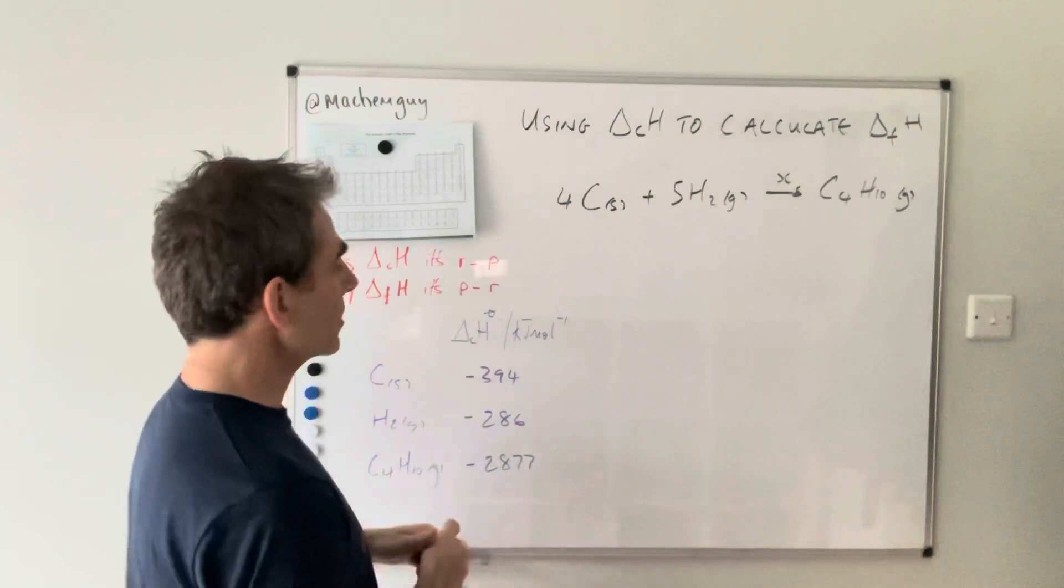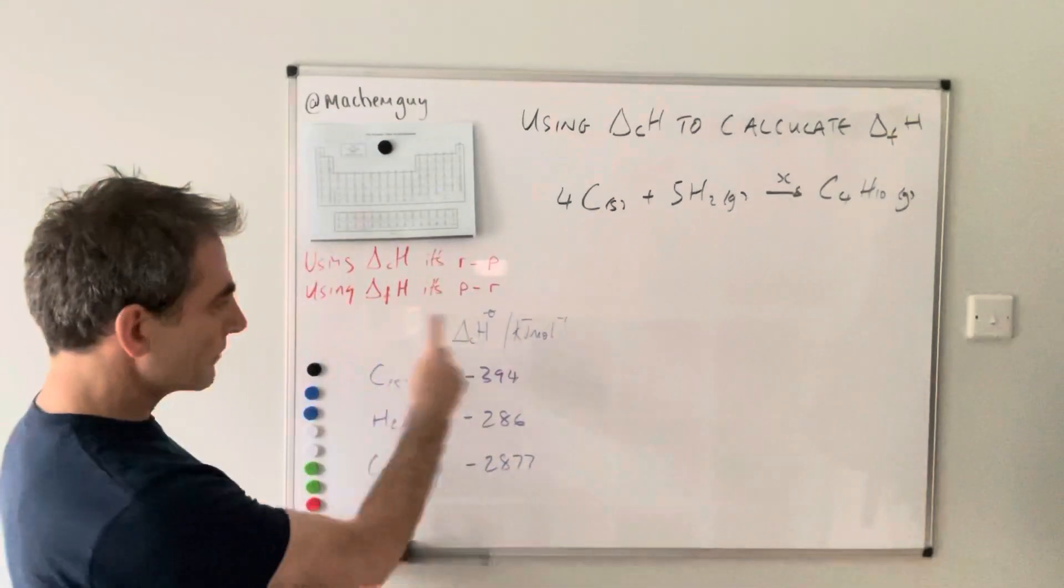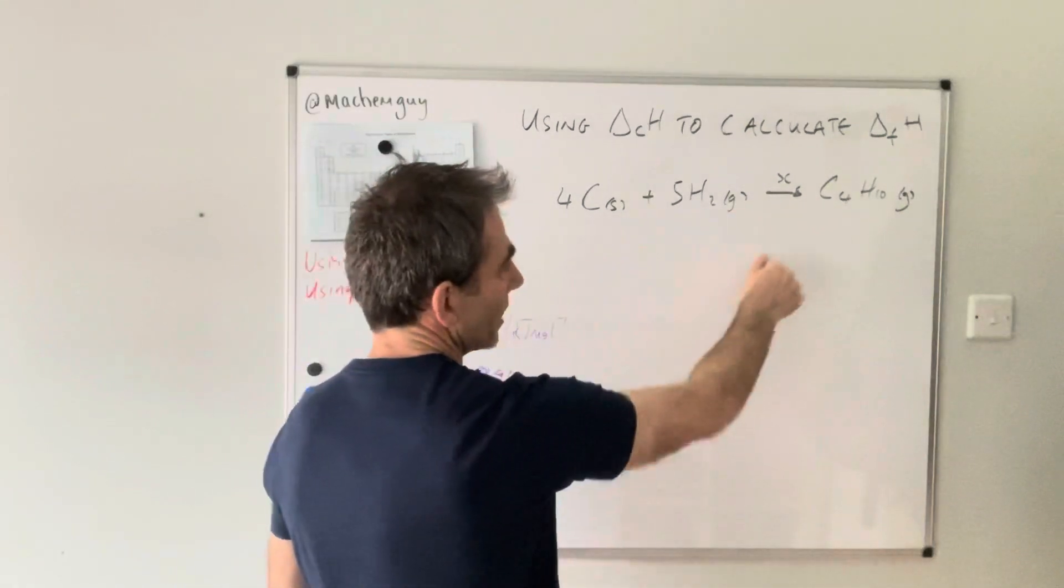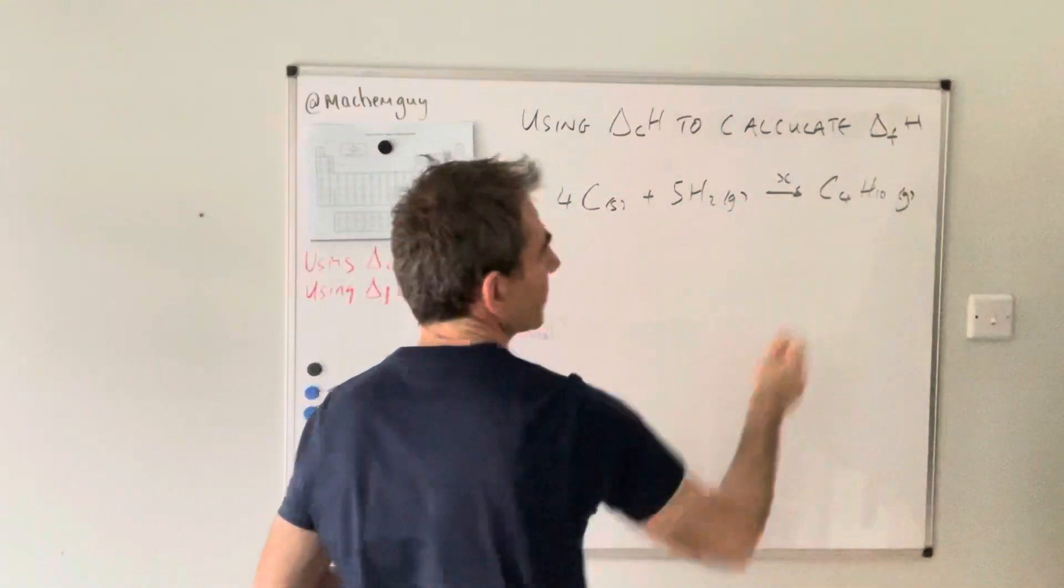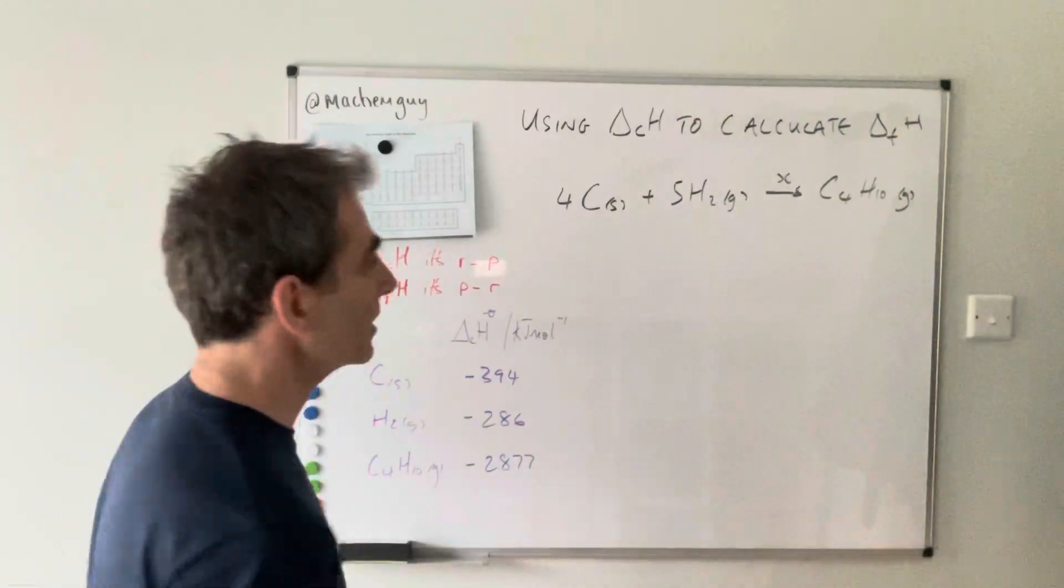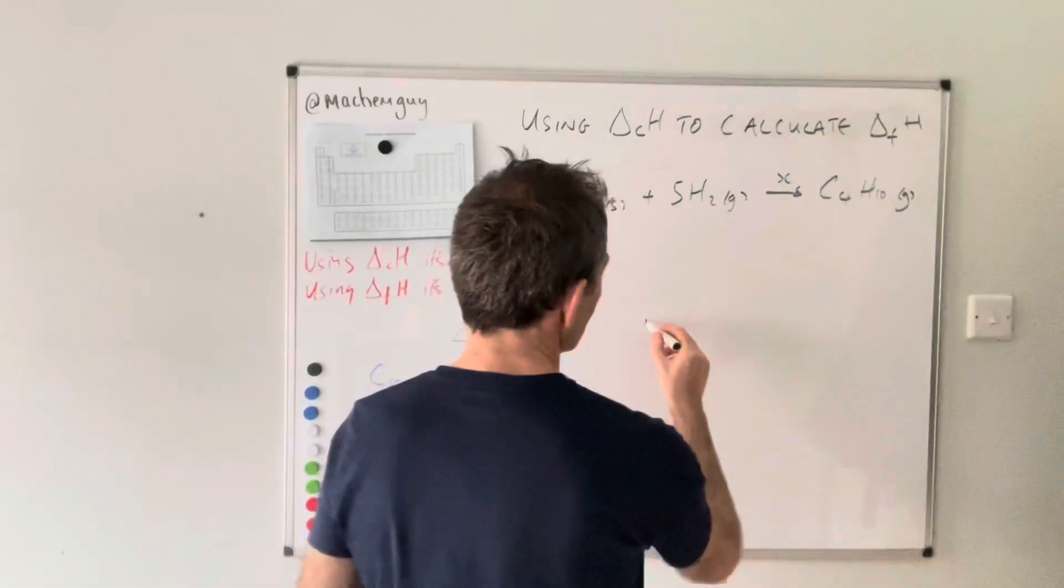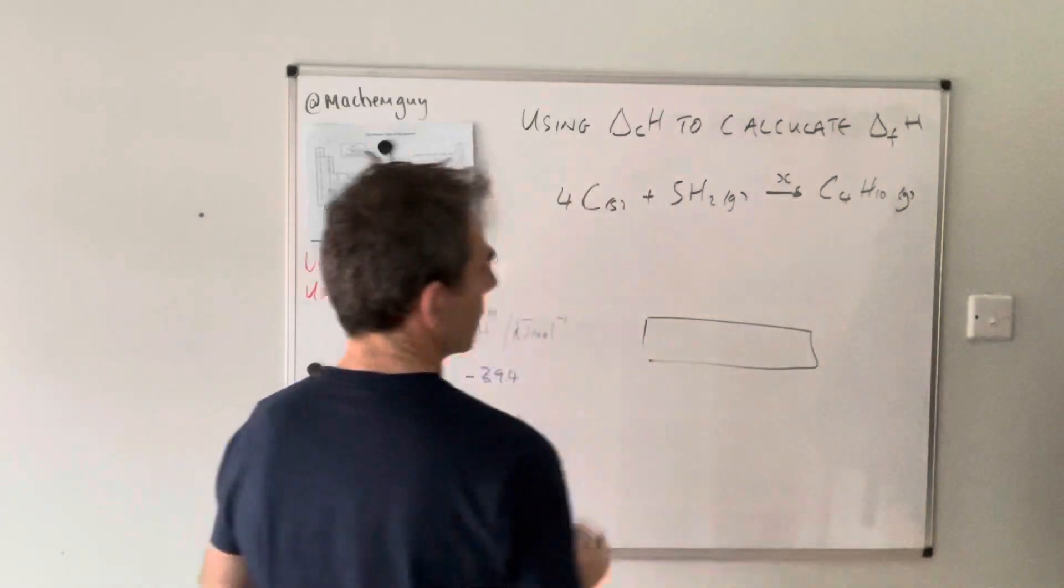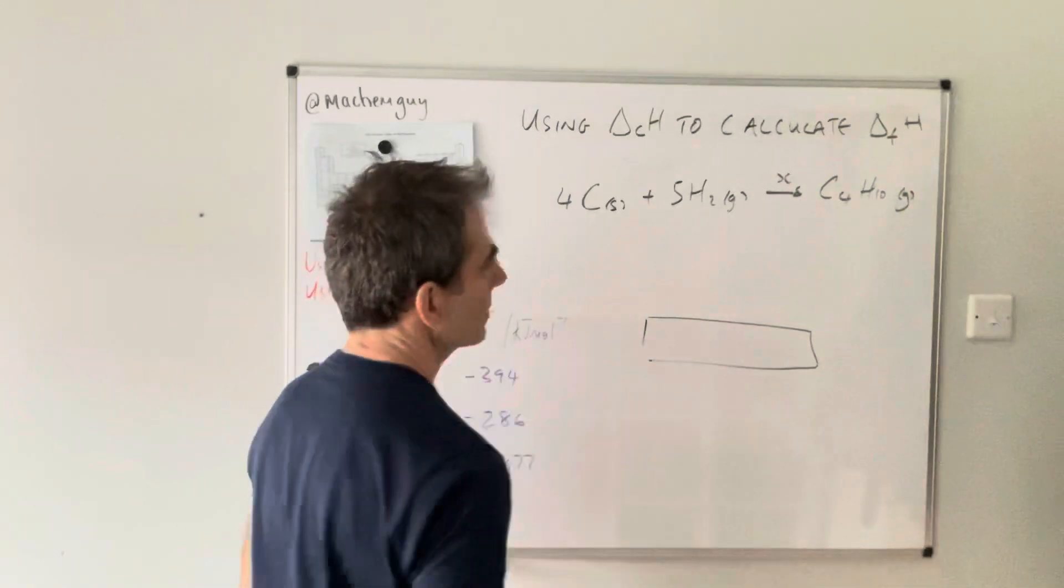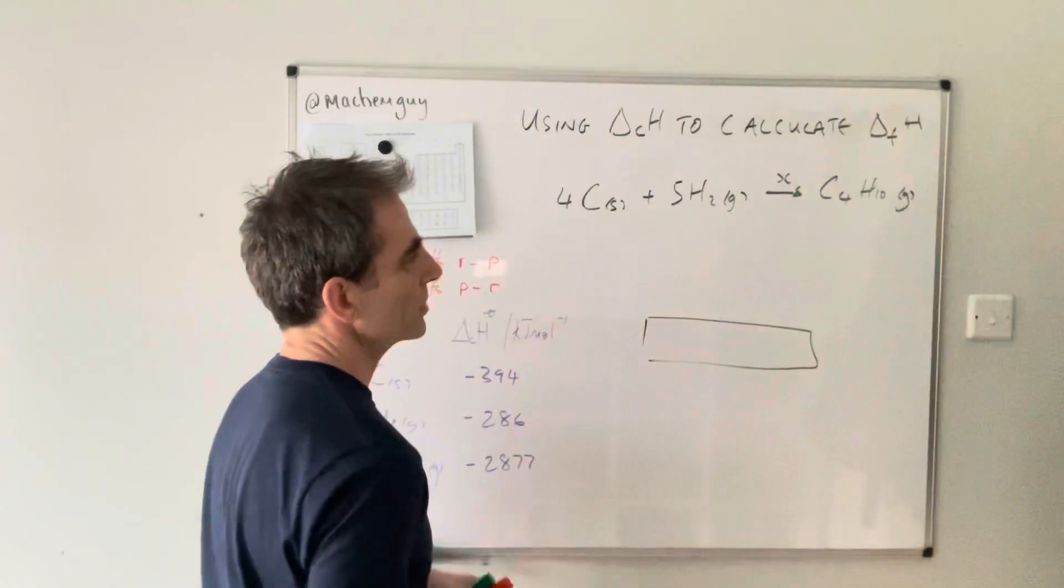What we're going to do is use these enthalpy changes of combustion to calculate the enthalpy change for this reaction, which is the formation of butane. We draw what I call a combustion cycle. I just have a little box at the bottom there, and I'm going to put in there the combustion products of everything in the equation.